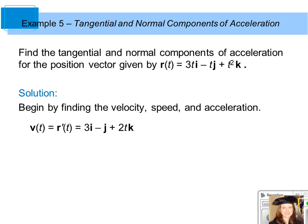Velocity, v of t, is equal to r prime of t, which equals 3i minus j plus 2t k. The derivative of 3t is 3, the derivative of minus t is negative 1, and the derivative of t squared is 2t. So that is your velocity vector valued function.